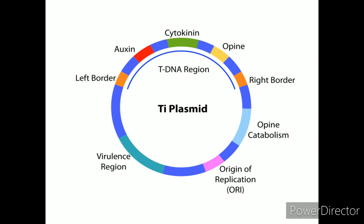Degradative plasmids. Degradative plasmids help the host bacterium to digest compounds that are not commonly found in nature, such as camphor, xylene, toluene, and salicylic acid. These plasmids contain genes for special enzymes that break down specific compounds. Degradative plasmids are conjugated.